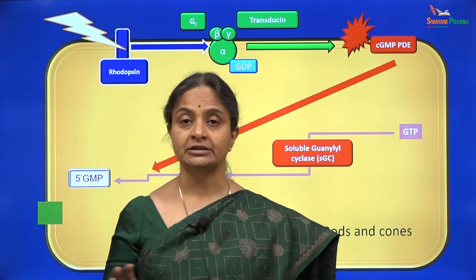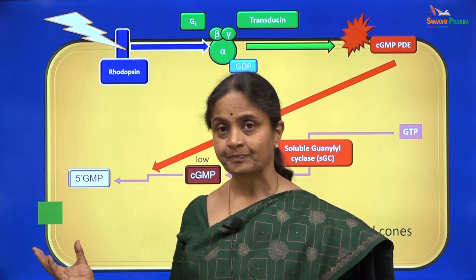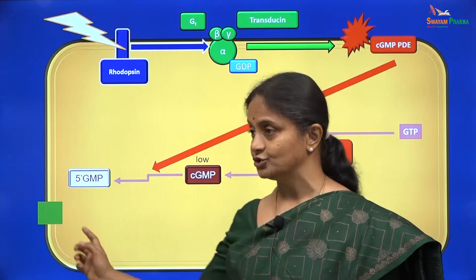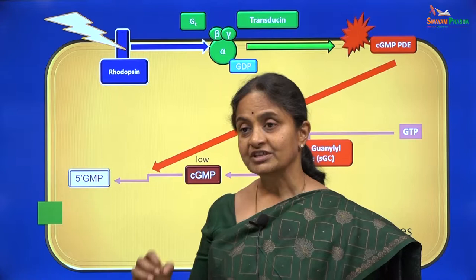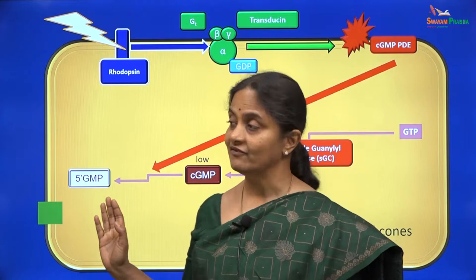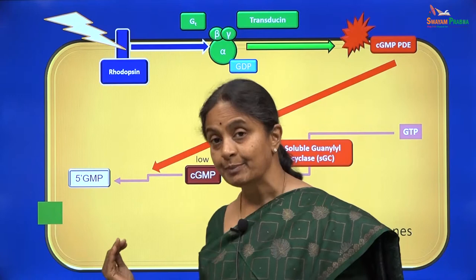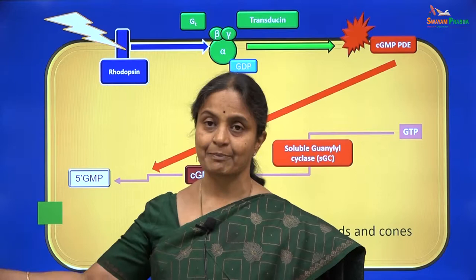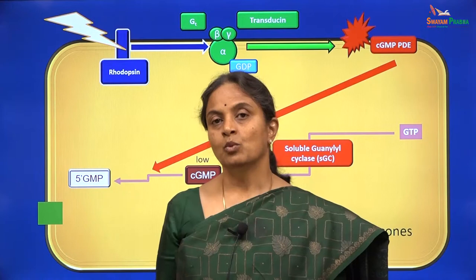This is interesting and peculiar because in all other neural transduction mechanisms, the first event at the sensory receptor level — the cell which senses that particular sensation — would be depolarization. The rods and cones are an exception where the very first event after light striking them is hyperpolarization. How that produces an effect on the next cell in the pathway we will see when we consider visual transduction.